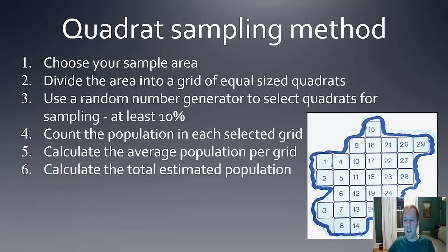So if I looked in box 1, 10, 22, 12, 25, etc., and I found that there was an average of 10 oysters in each of those grids. Once I know that there's 10 oysters per grid, I can then multiply that by the total number of grids. 29 quadrats times 10 per quadrat gives me an estimated population of 290 individuals.